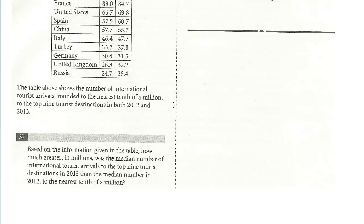And we know there are nine. We talked about a median question in the last video. Nine is an odd number, so there's one median, which means there are eight left — four on either side. So we just want the fifth term; that would be the middle. And they're all in order, so one, two, three, four, five.